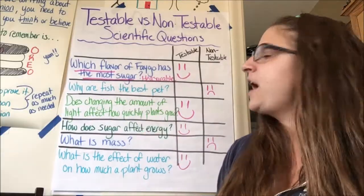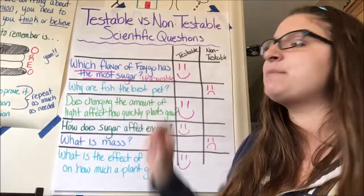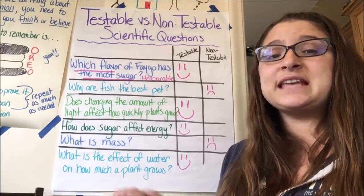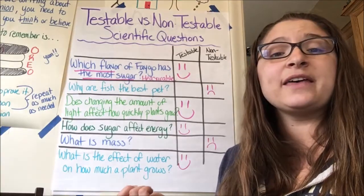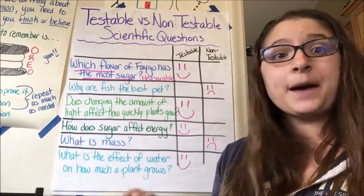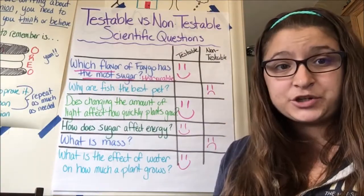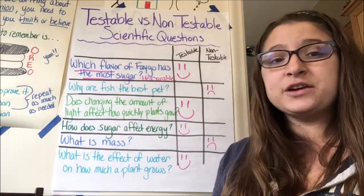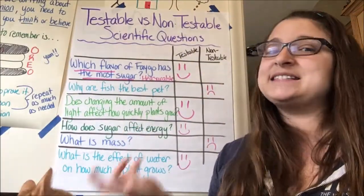Why are fish the best pet? We said that was not testable. But you can take a question and by making it more specific, it can become a testable question. For example: which fish eats the most food — a betta fish, a guppy, or a goldfish? You could test that. Or: how does water temperature affect how much your fish swims? That's something you can measure. If you can measure it, you can test it. It's a testable question. If you cannot measure it, it is not a testable question.